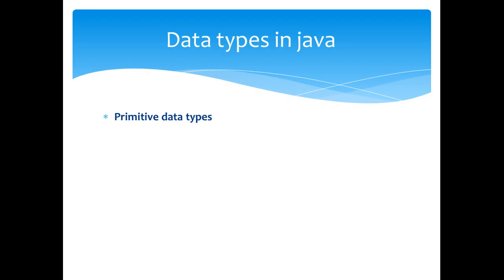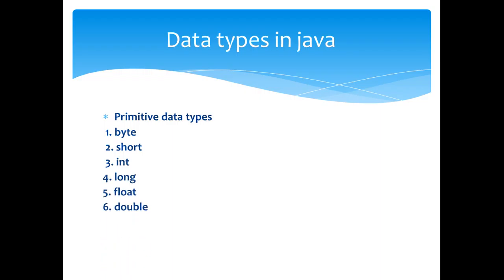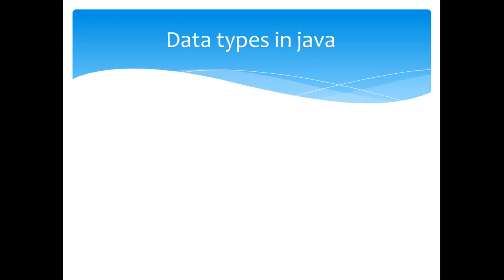Now we are going to look at what are the primitive data types available in Java. The first one is the byte type, second one is short, third one is integer and long, float type, double, boolean, and character.